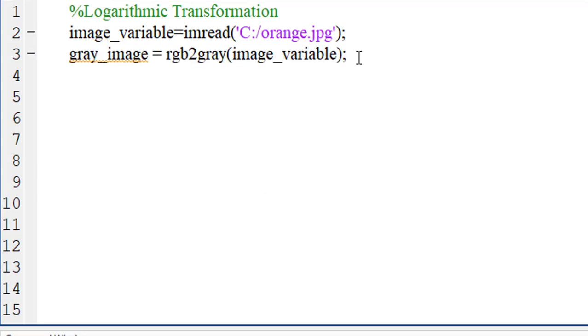While working with logarithmic function, it is preferred in MATLAB to use double value. Let's convert our existing image into double type. Using im2double function, we can convert the value of grayscale image into a double data type.